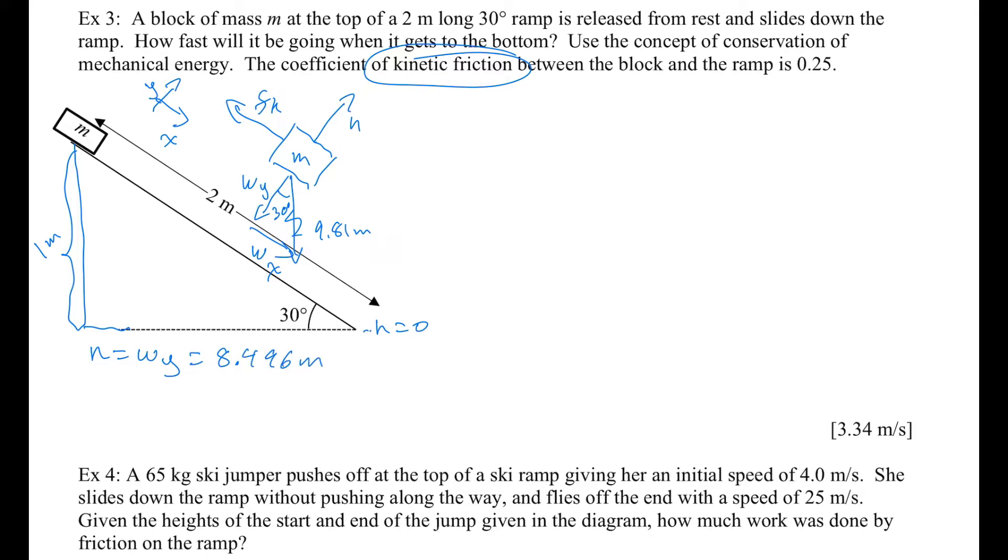Notice that that m is the mass, the unknown mass still. And from that, I can get fk equals mu k times n. That's equal to 0.25 times 8.496m. So friction is going to be equal to 2.124m.